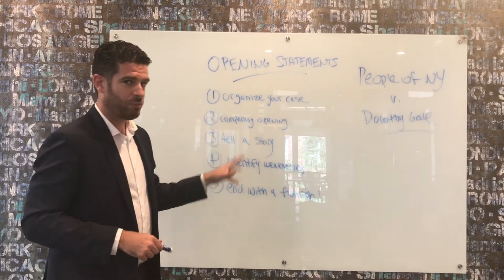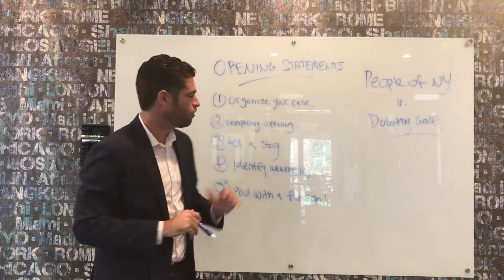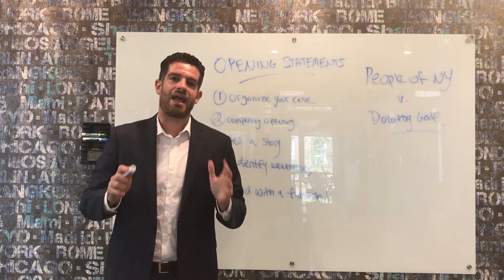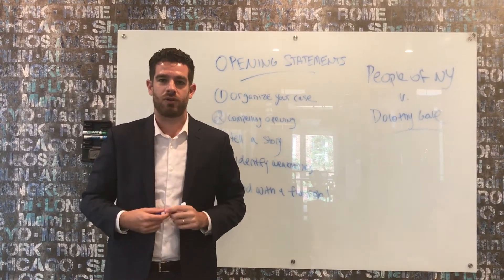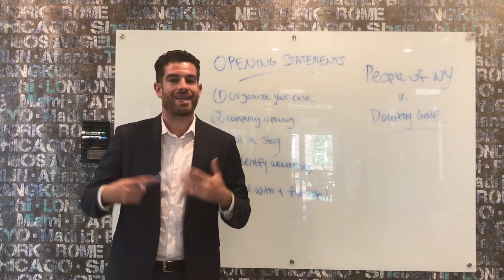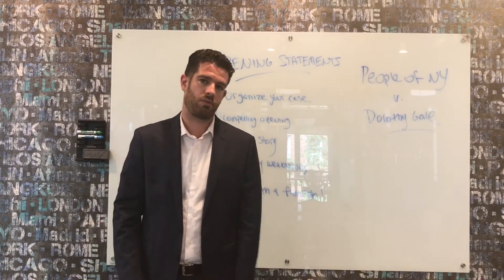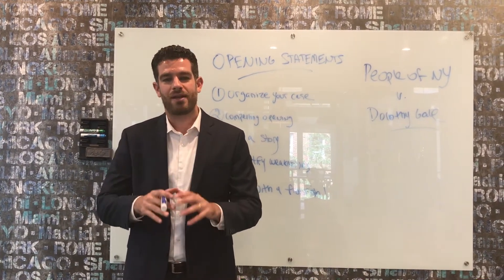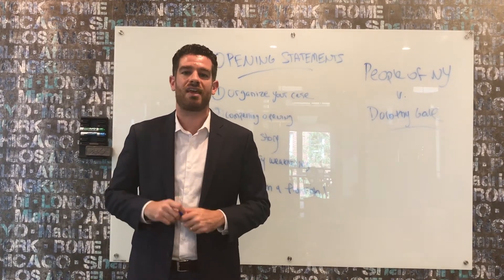The third point — and I put it in the middle because it's really the most important — is something that people just don't do enough: you want to tell a compelling story over the course of your opening statement. It should be a narrative with a beginning, a middle, and an end. It should be logical, compelling, and persuasive. You're not just going to get out there and list witnesses and what they'll say. You want to get out there, be dynamic, and tell the jury an engaging story.